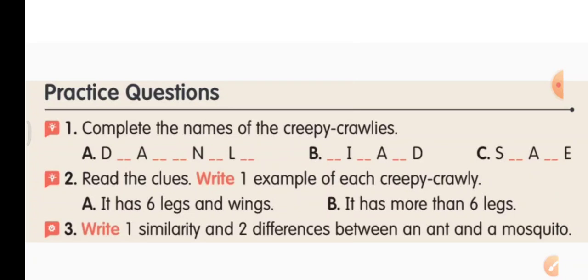Second question: read the clues and write one example of each creepy crawly. A — it has six legs and wings — write butterfly. B — it has more than six legs — you can write centipede or any example you know that has more than six legs.